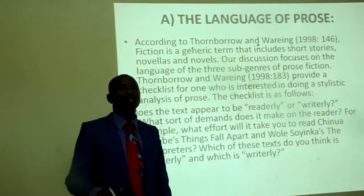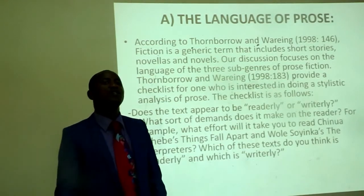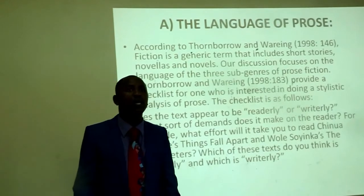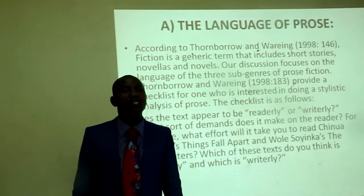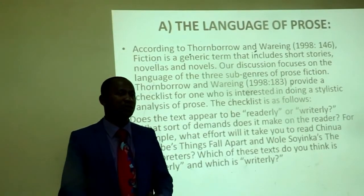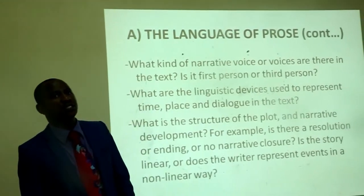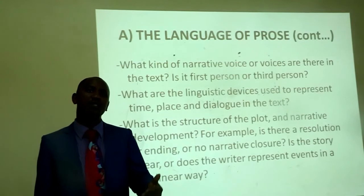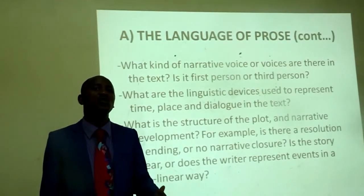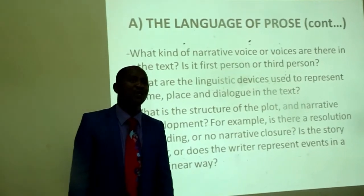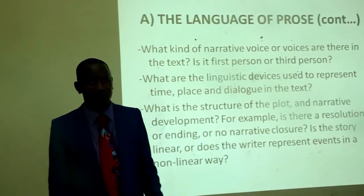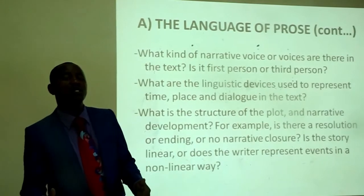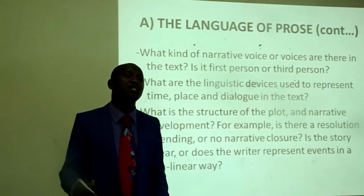The checklist is as follows: Does the text appear to be readerly or writerly? What sort of demands does it make on the reader? For example, what effort will it take you to read Chinua Achebe's Things Fall Apart and Wole Soyinka's The Interpreters? Which of these texts do you think is readerly and which is writerly? What kind of narrative voice or voices are there in the text? Is it first person or third person? What are the linguistic devices used to represent time, place and dialogue? What is the structure of the plot and narrative development? Is there a resolution or ending, or no narrative closure? Is the story linear, or does the writer represent events in a non-linear way?